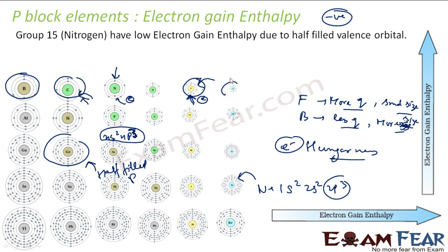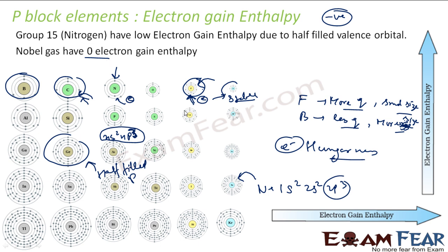Similarly, noble gases are fully stable, so their electron gain enthalpy is zero — they have no desire to gain electrons at all. Even though their nuclear charge is very high and their size is pretty small, they will not attract electrons because they are already stable and do not want any disturbance. In the case of Nitrogen, since it is partially stable, it will have less tendency to attract electrons.